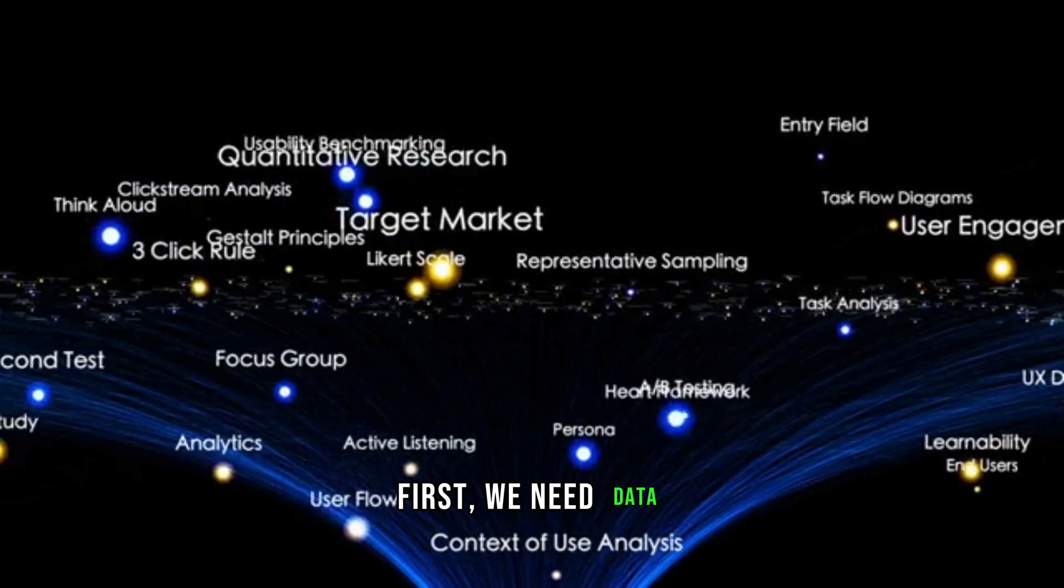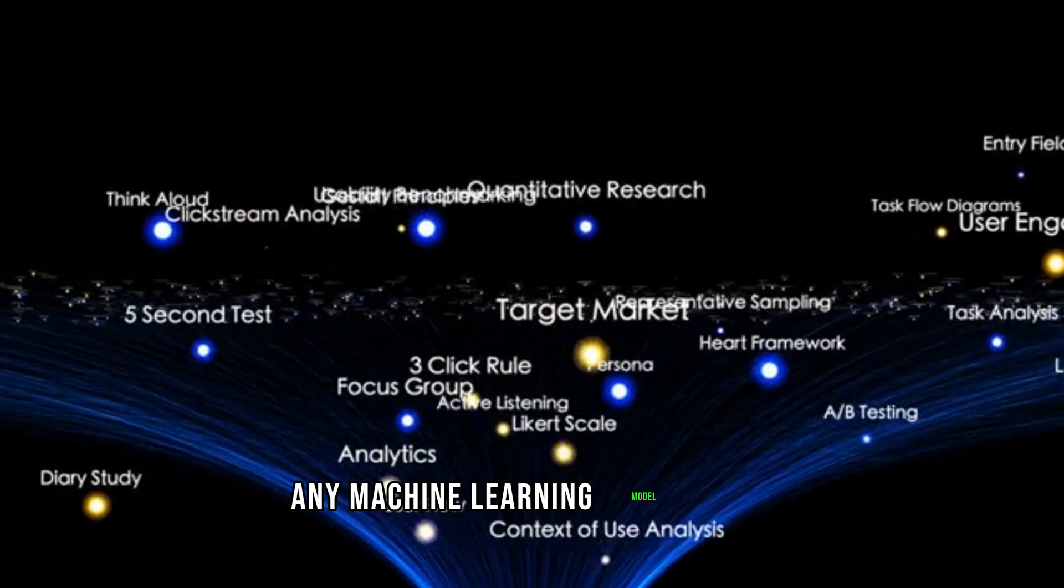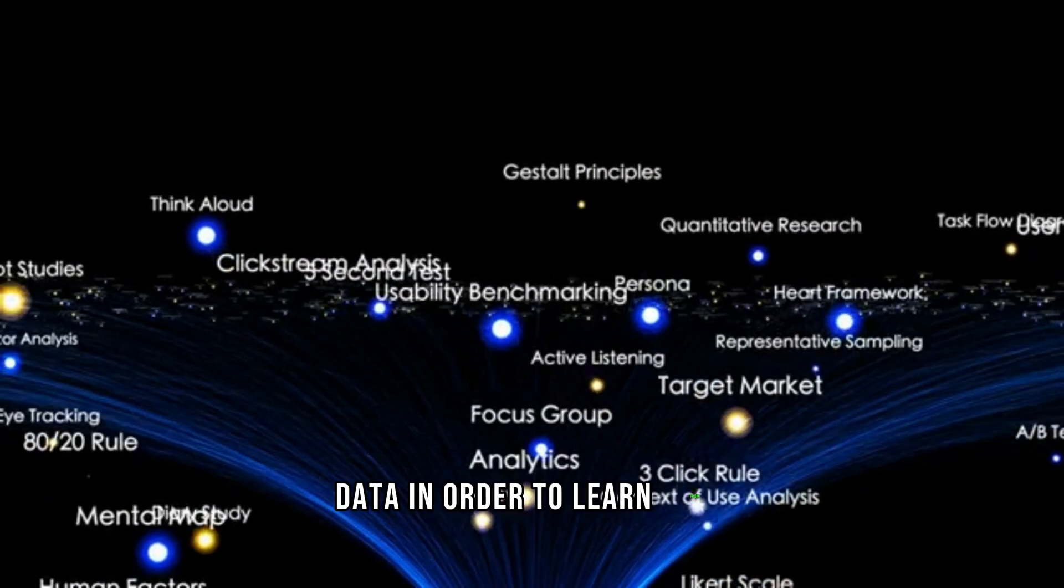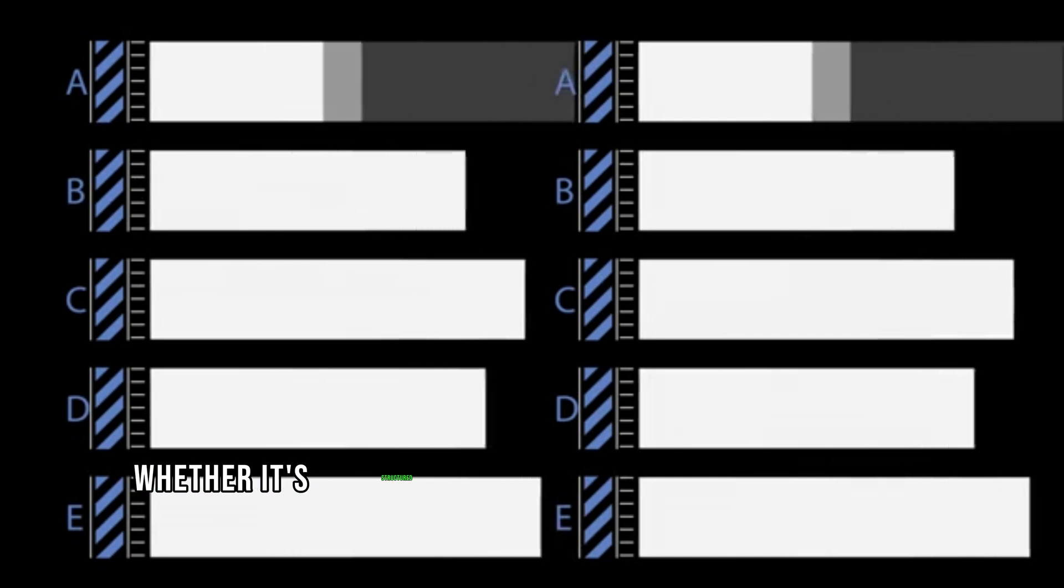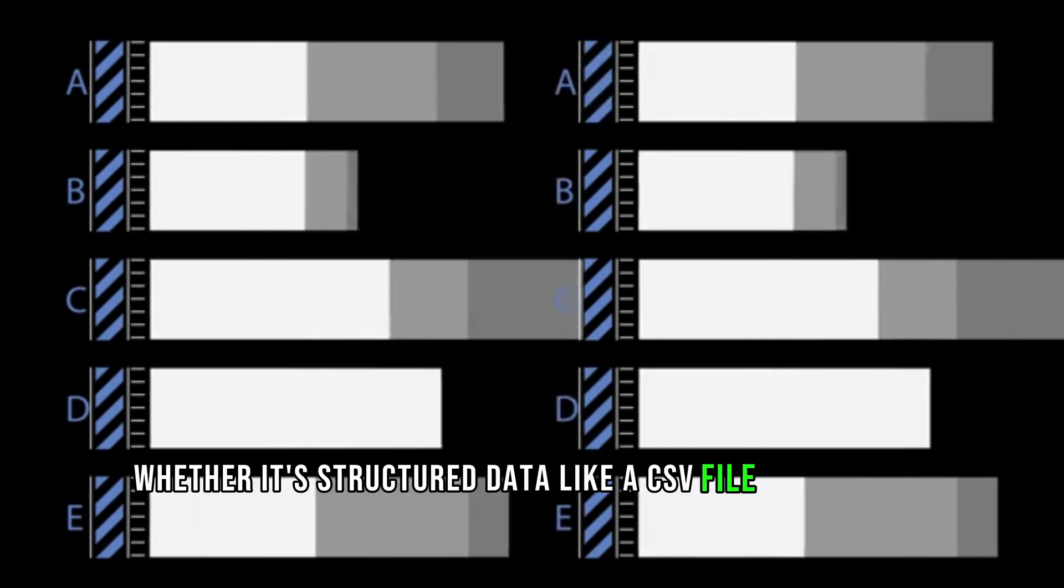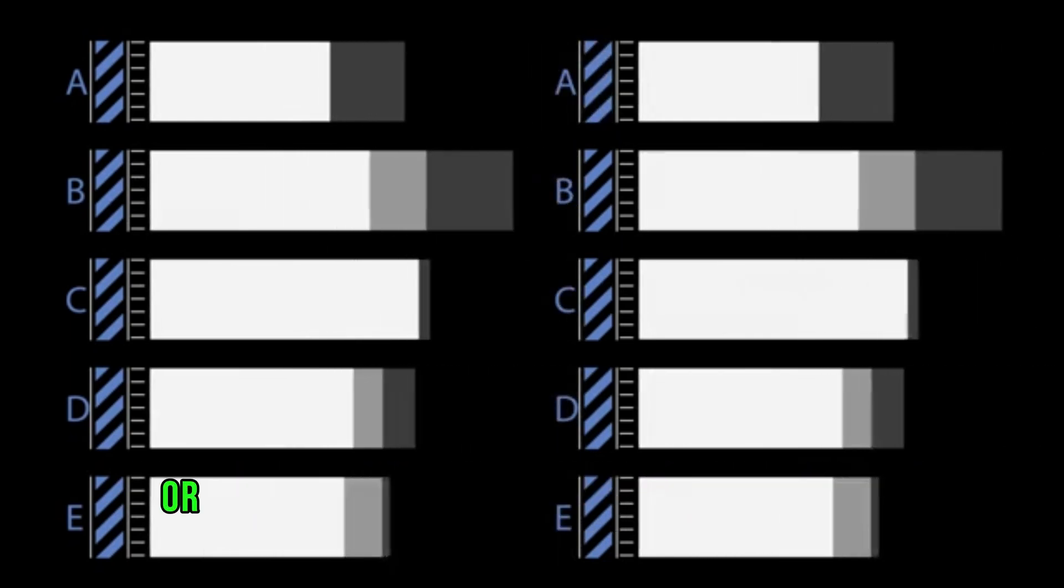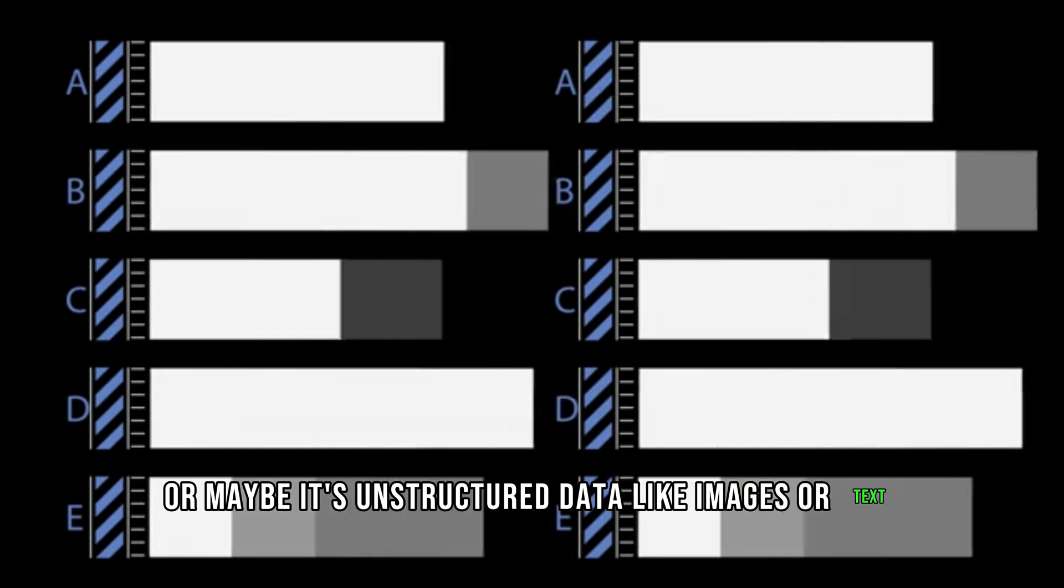First, we need data. Any machine learning model needs data in order to learn. The data can come in many different forms, whether it's structured data like a CSV file or an Excel spreadsheet, or maybe it's unstructured data like images or text.